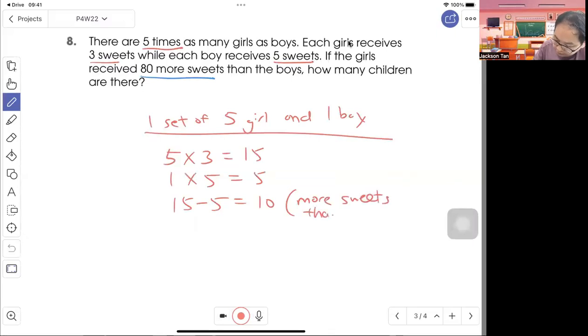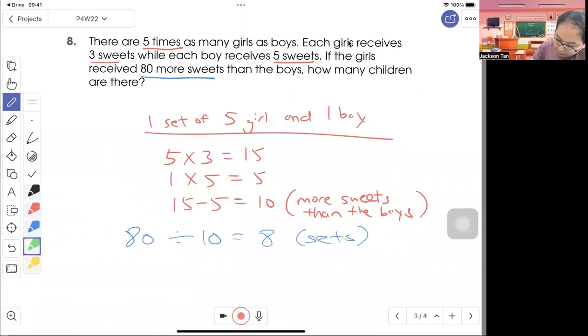So we take 80 more divided by 10 more, we know that there are 8 sets altogether. So one set have how many kids? 5 plus 1, 6 children right. So obviously 8 sets will have 48 children. And that's the answer.